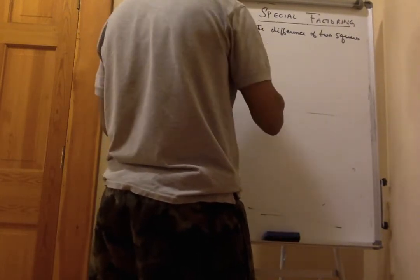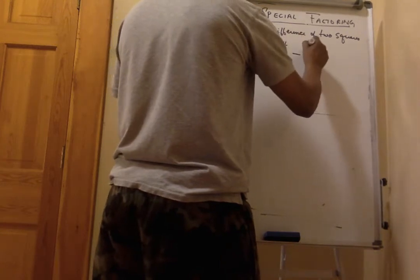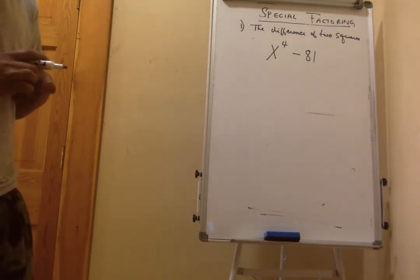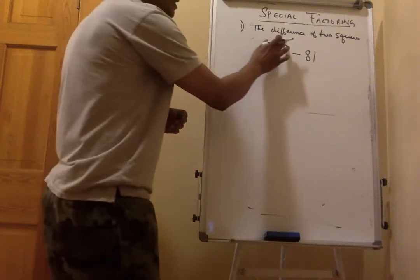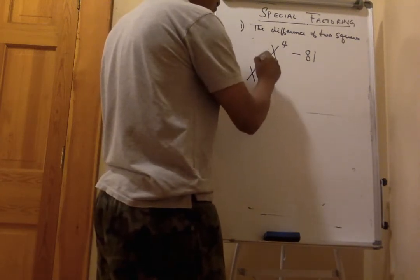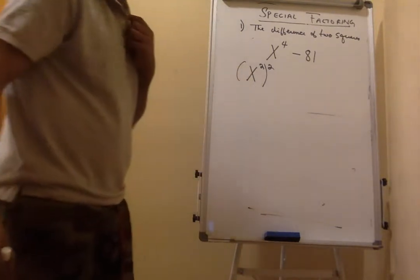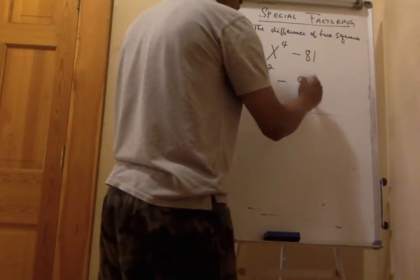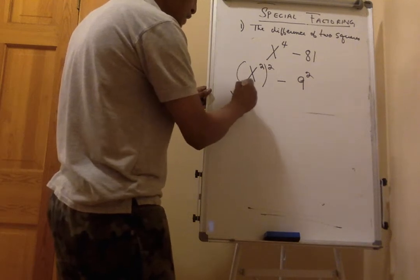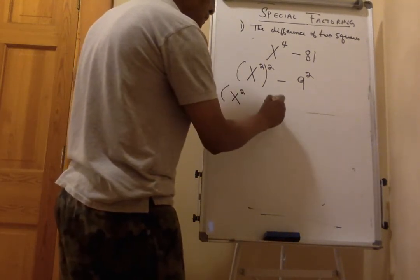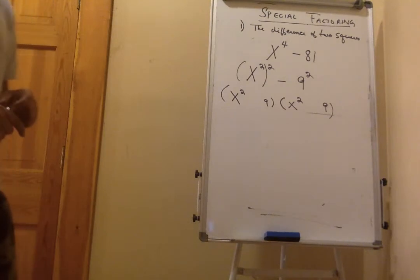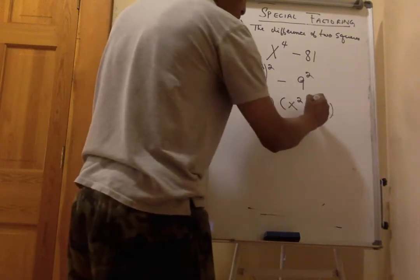One more: x to the fourth minus 81. Even though this is raised to the fourth power, it is also an example of the difference of two squares. Rewrite x to the fourth as (x squared) raised to the second power, and 81 as 9 squared. Apply the formula to get (x squared + 9)(x squared - 9).